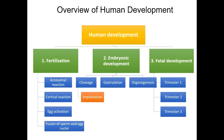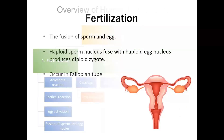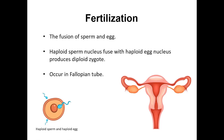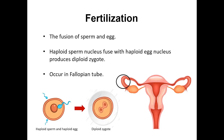Let's have a detailed look at each of them to further understand all the processes in human development. Let's begin with the first stage, fertilization. Fertilization is the fusion between sperm and egg. Both gametes are haploid and the fusion produces a zygote, which is diploid. This process takes place in the fallopian tube.